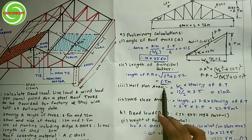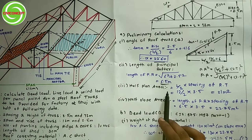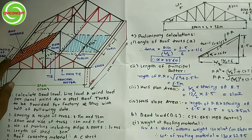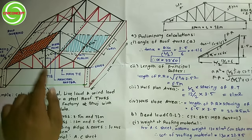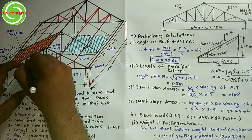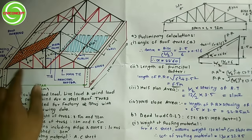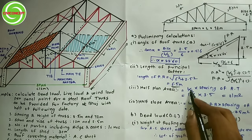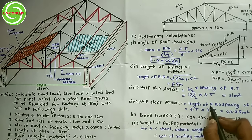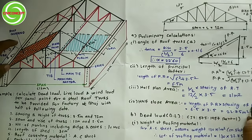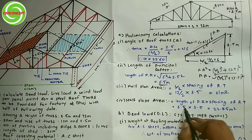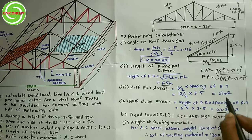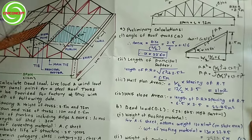The half slope area is calculated using the length of the principal rafter multiplied by the spacing of the roof truss: PR × spacing = 6.5 × 3.5 = 22.75 square meters. So the half slope area is 22.75 square meters, and the half plan area is 21 square meters.